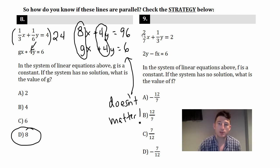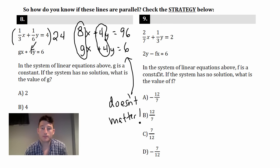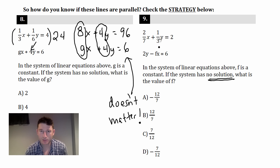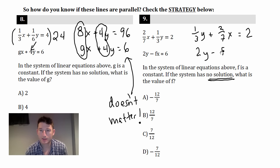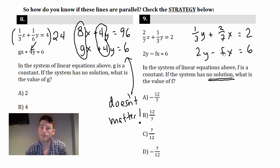Let's check another one. In the system of linear equations above, F is a constant. If the system has no solution, what is the value of F? Again, parallel lines. They made it trickier here because the x's and y's are not lined up. So first, let's get them lined up: 1/3 y + 2/7 x = 2, and the bottom one is 2y − Fx = 6.